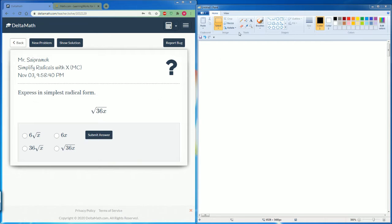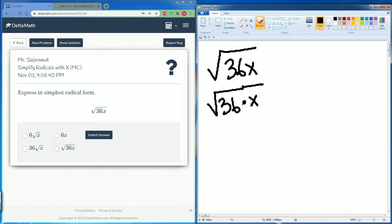The square root of 36x we can split into two parts: radical 36 times x, and they can go into their individual radicals. So radical 36 times radical x.